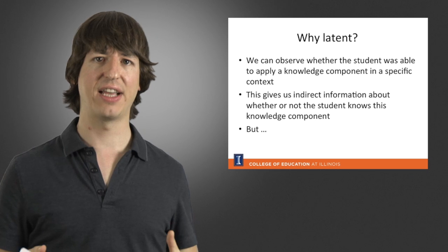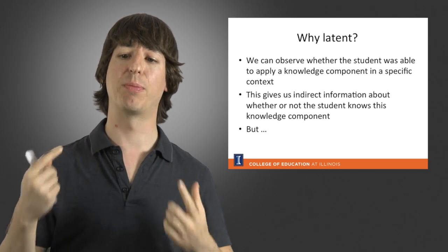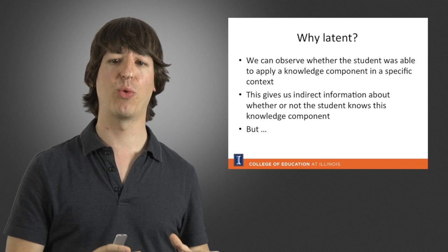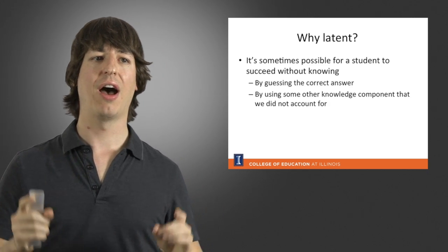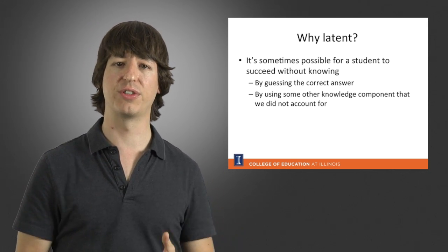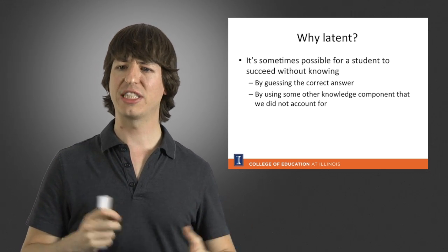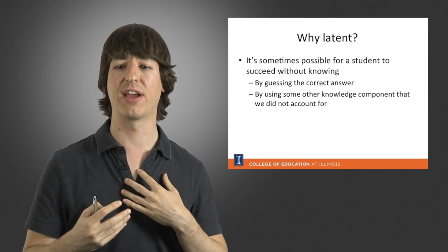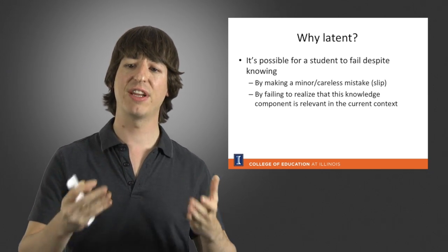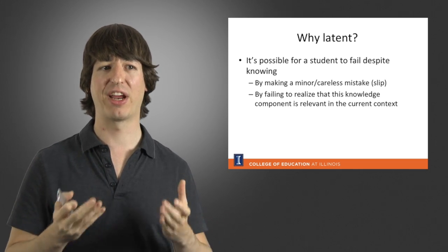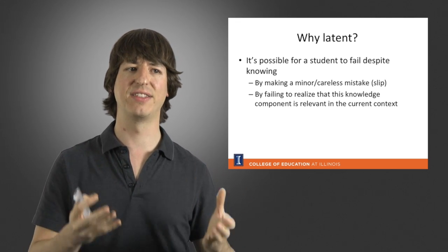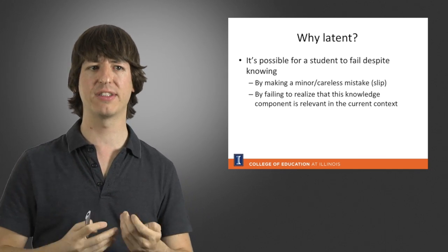We can't observe the knowledge itself, but what we can observe is whether the student is able to apply a knowledge component in a specific context. This gives us indirect information about whether or not the student knows this knowledge component. But it's sometimes possible for a student to succeed without knowing something — they might just guess the correct answer, or use some other knowledge component we didn't account for. It's also possible for a student to fail even if they know it, by making a careless mistake called a slip, or failing to recognize that the knowledge component is relevant in the current context.